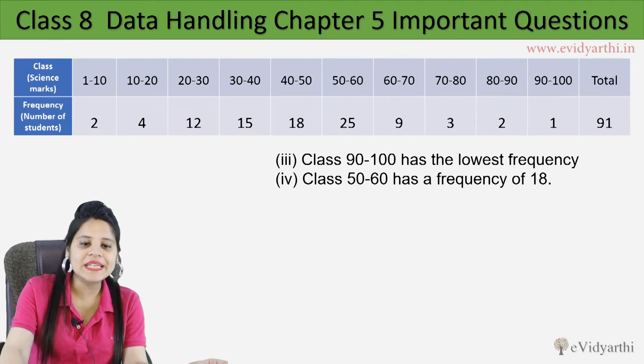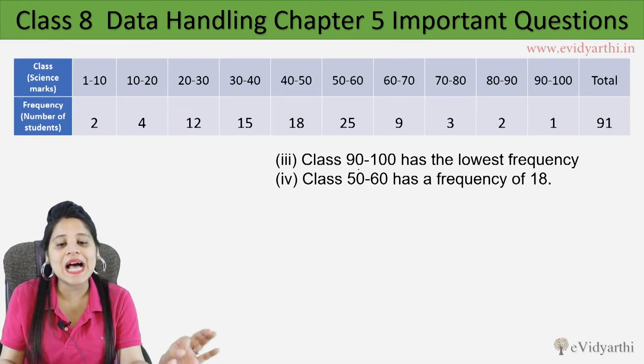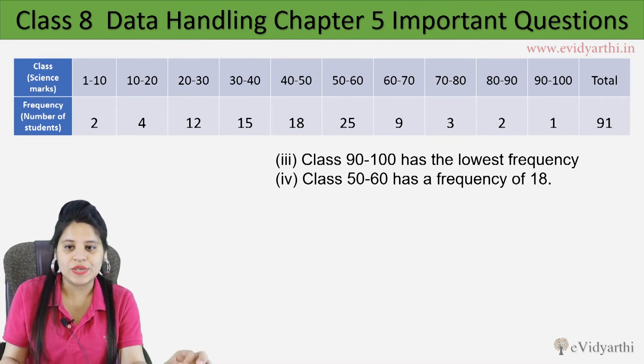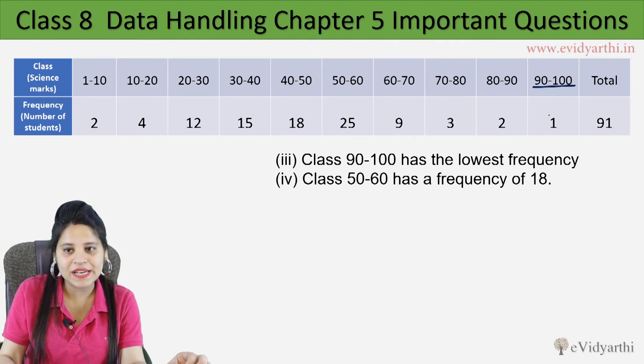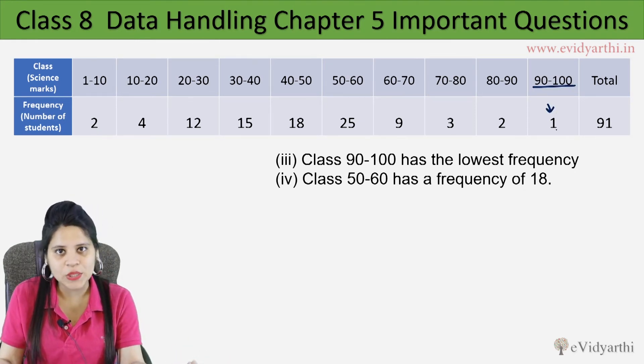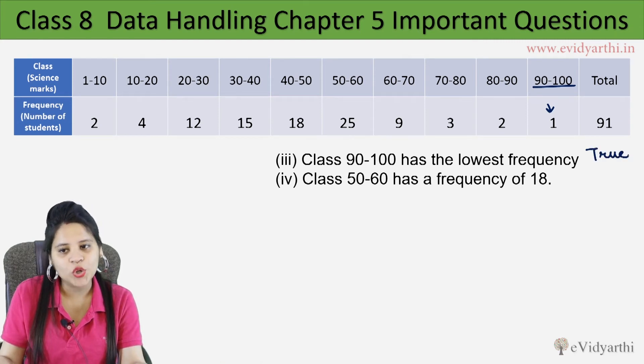Moving to the next part. Third part is class 90 to 100, this is basically class interval, has the lowest frequency. Now 90 to 100, how much frequency is this? 1. So you can see that 1 is the lowest one. So this means this is true.